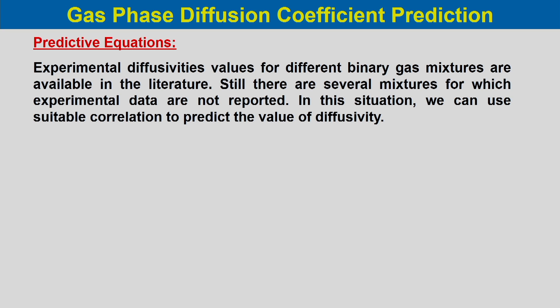Regarding predictive equations: in many situations experimental diffusivity values for binary gas mixtures are available in the literature. But there are several mixtures for which experimental data are not reported. In this situation, we can use suitable correlations to predict the value of diffusivity. These predictive equations are based on relations developed for different systems based on the variation of temperature, pressure, molecular weight of components, or their molecular volumes.